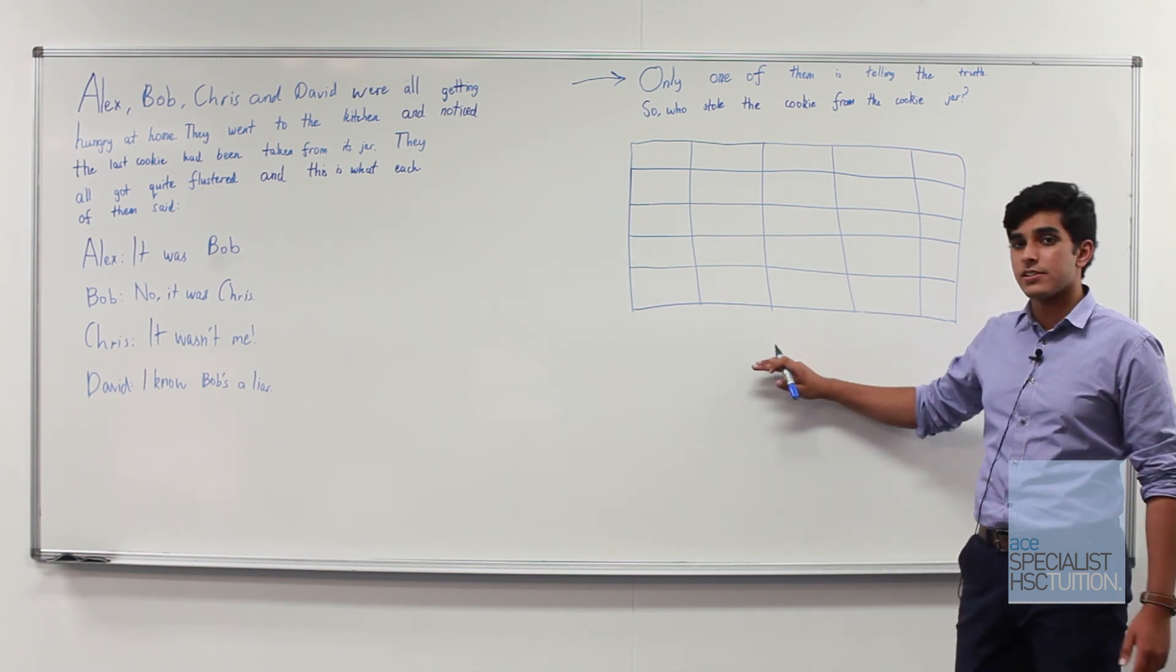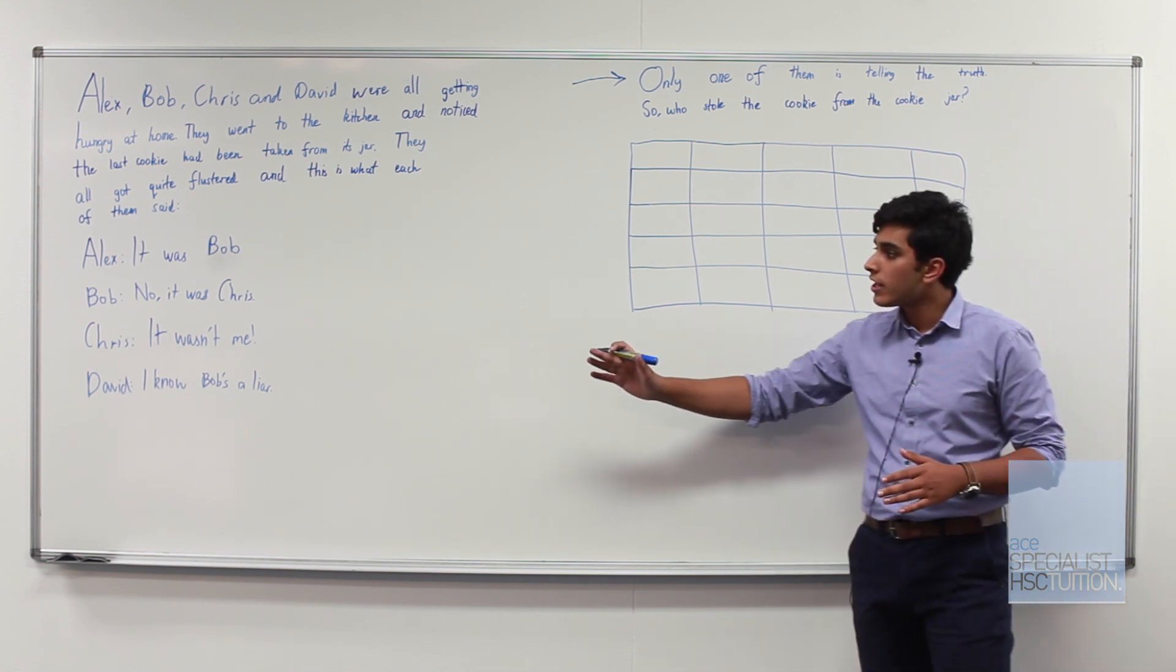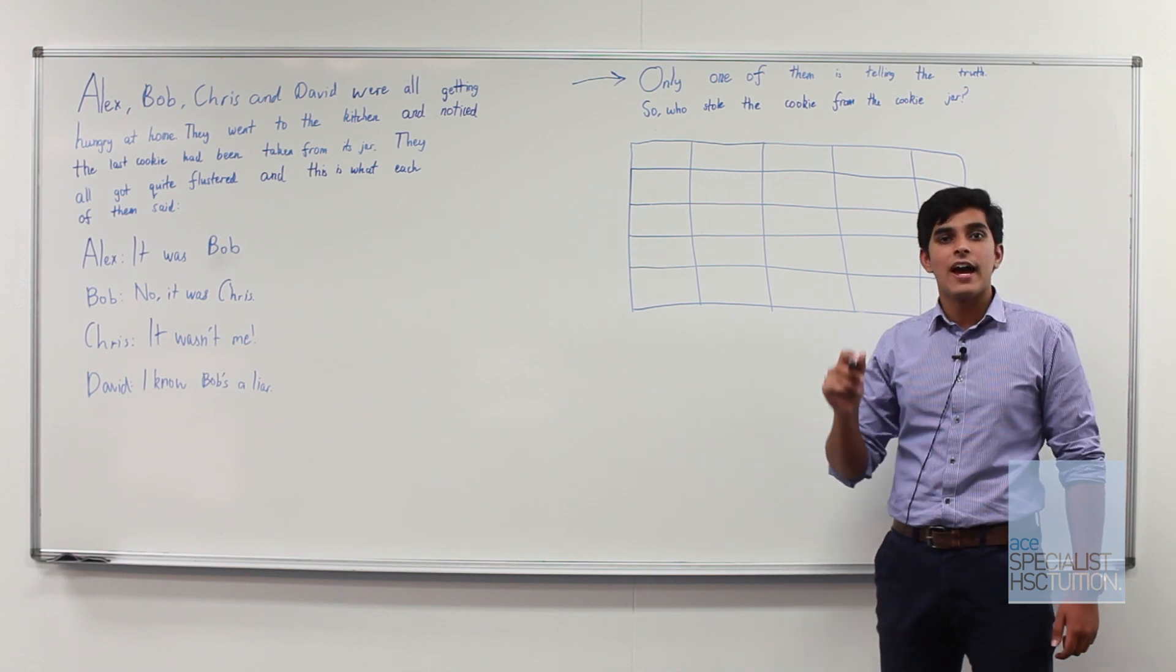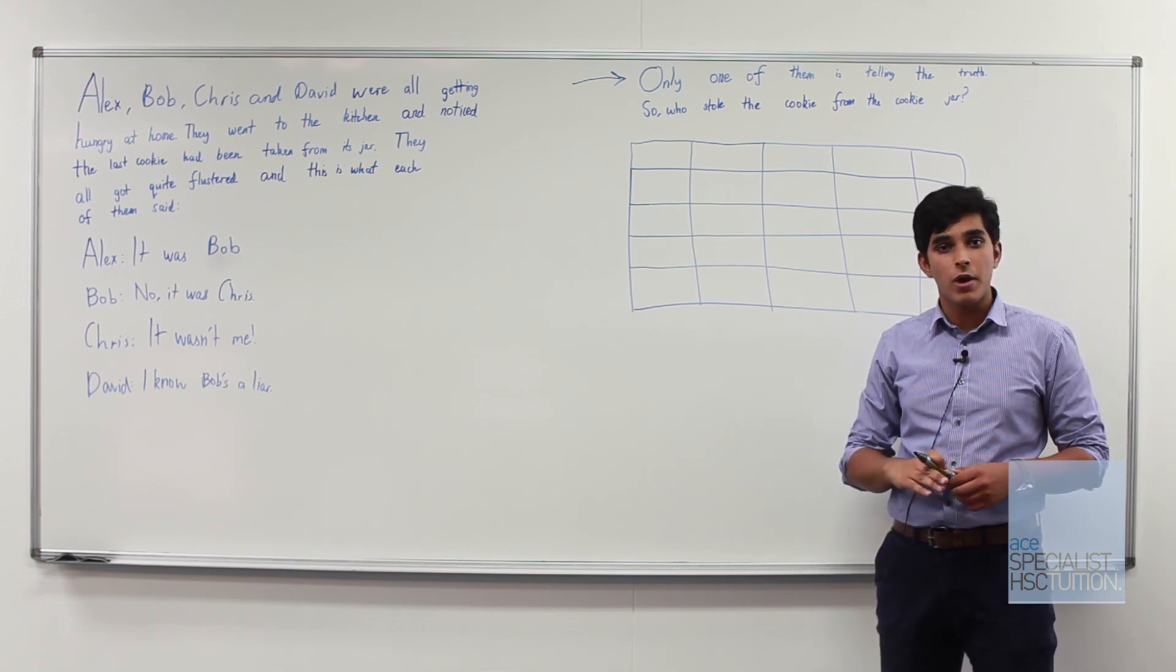So the table we're going to design is going to work on this particular premise where we're going to assume that Alex, Bob, Chris or David has stolen the cookie and then work out how the statements are true or false in that particular situation.